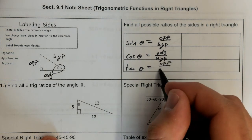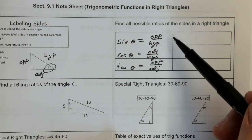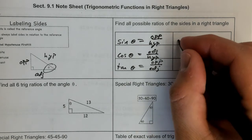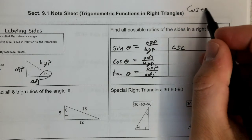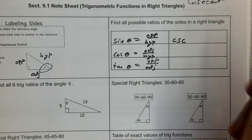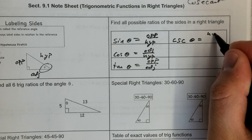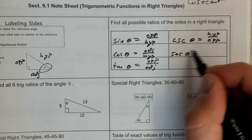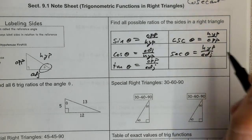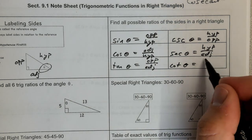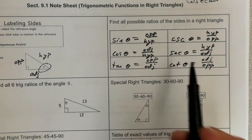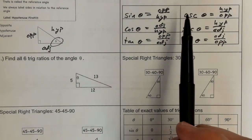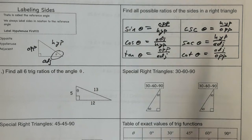Tangent of theta equals opposite over adjacent. Now it turns out you can also flip these, and those ratios have names. If you flip the sine function you get cosecant — abbreviated 'csc'. Cosecant of theta equals hypotenuse over opposite. Secant of theta equals hypotenuse over adjacent. Cotangent of theta equals adjacent over opposite. It is counterintuitive that cosecant goes with sine rather than cosine, but that's how it works. These are called the reciprocal functions.